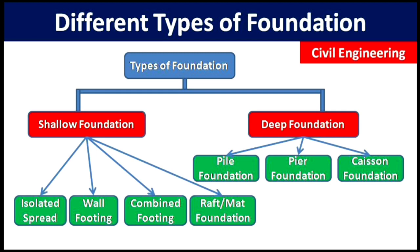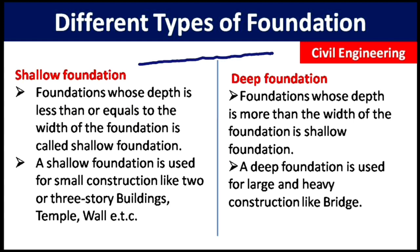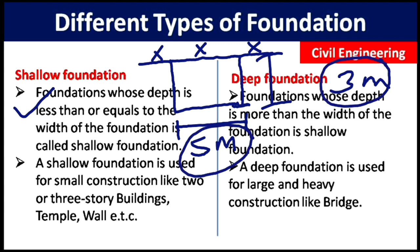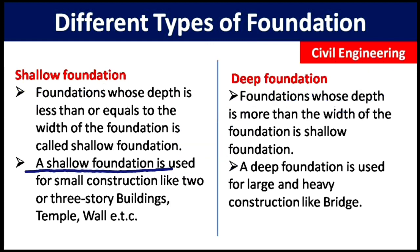The foundation whose depth is less than or equal to the width of the foundation is called a shallow foundation. For example, if the depth is 3 meters and the width is 5 meters, it is a shallow foundation. But if the depth is 5 meters and the width is only 3 meters, it is a deep foundation. Shallow foundation is used for small construction like two or three storey buildings, while deep foundation is used for large and heavy construction like bridges.